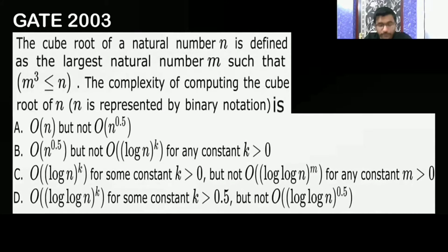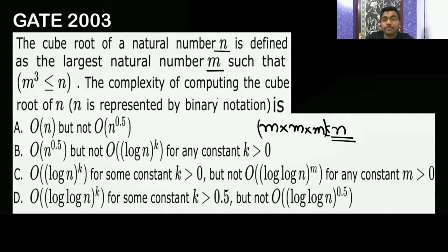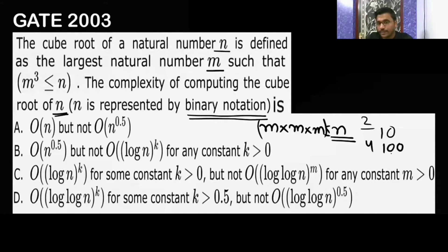The question states: the cube root of a natural number n is defined as the largest natural number m such that m cubed is less than or equal to n. The time complexity of computing the cube root of n, where n is represented by binary notation using 1s and 0s, is to be determined.